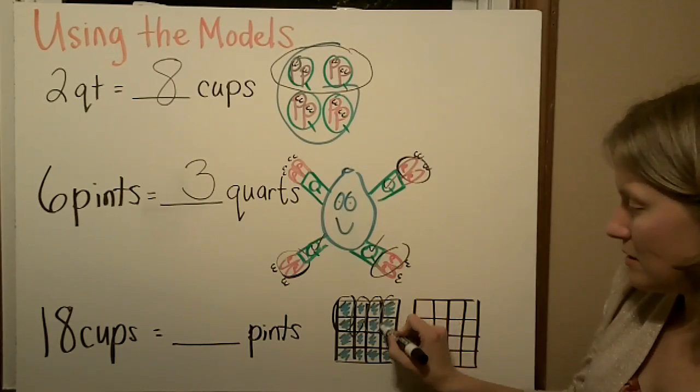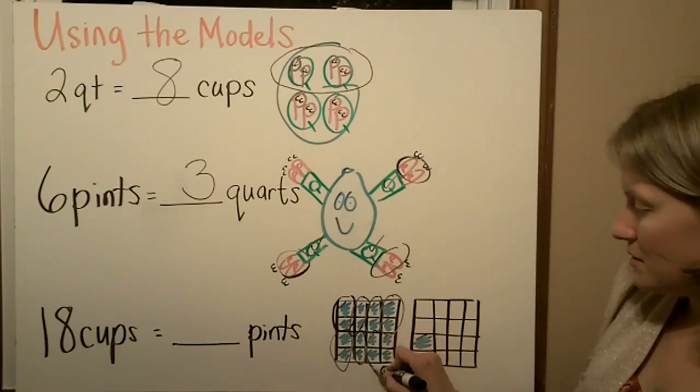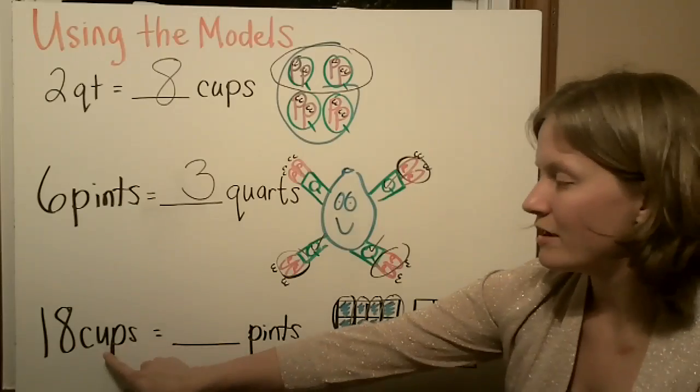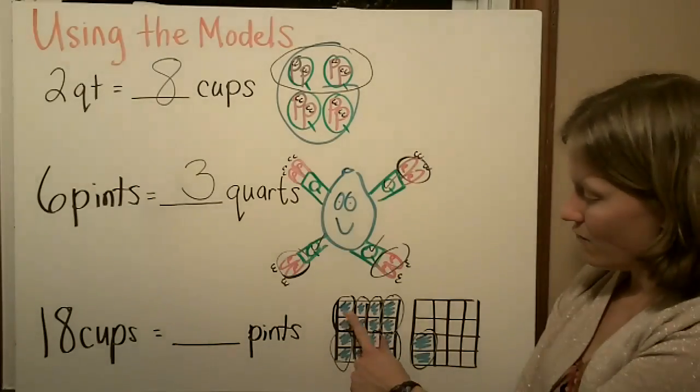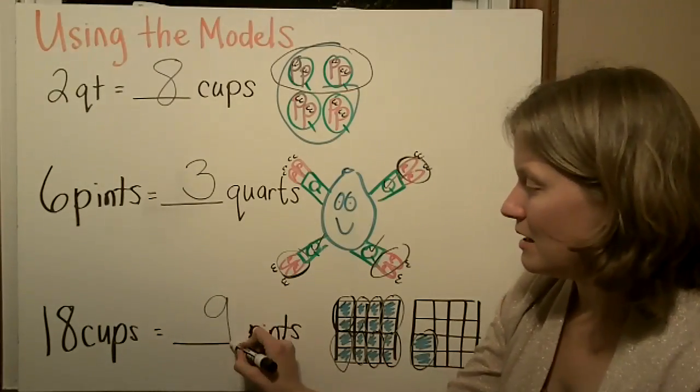So there's a pint, there's a pint, there's a pint, there's another one. Five, six, seven, eight, nine. I colored in all the cups then circled the pieces that were pints. There are nine pints in 18 cups.